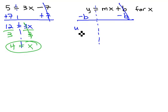y and b are not like terms, so we will simply write y minus b equals m times x.